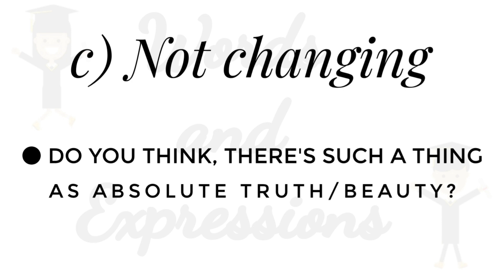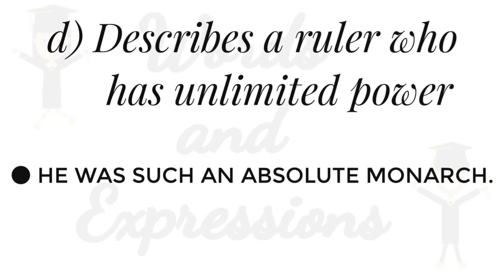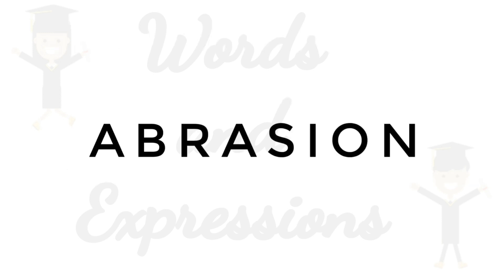For example: 'Do you think there is such a thing as absolute truth or absolute beauty?' Number four: describes a ruler who has unlimited power. For example: 'He was such an absolute monarch.'